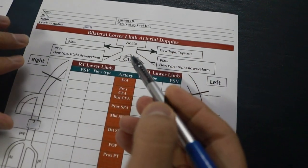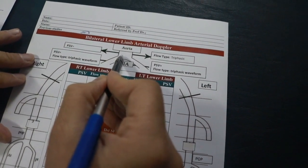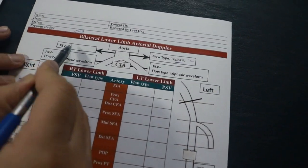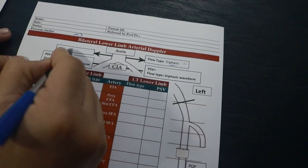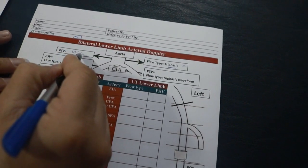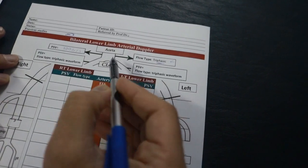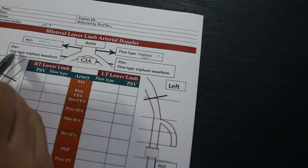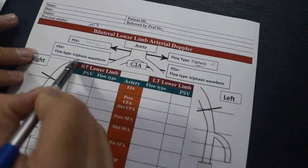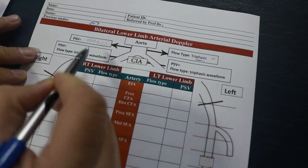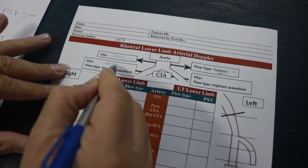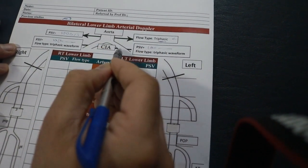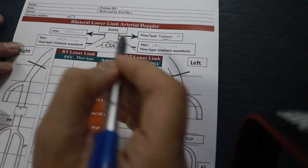Now what we did: aorta, type of flow was triphasic, peak systolic velocity was around 100 cm per second. Iliac vessels, type of flow was triphasic on the left and triphasic on the right. Peak systolic velocity around 100 cm, also around 100 cm. That means the aorta and the external iliac arteries was very good and normal.